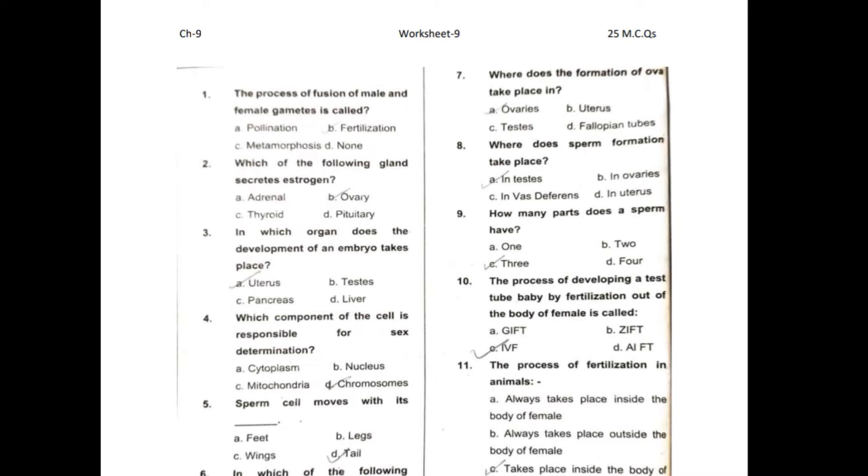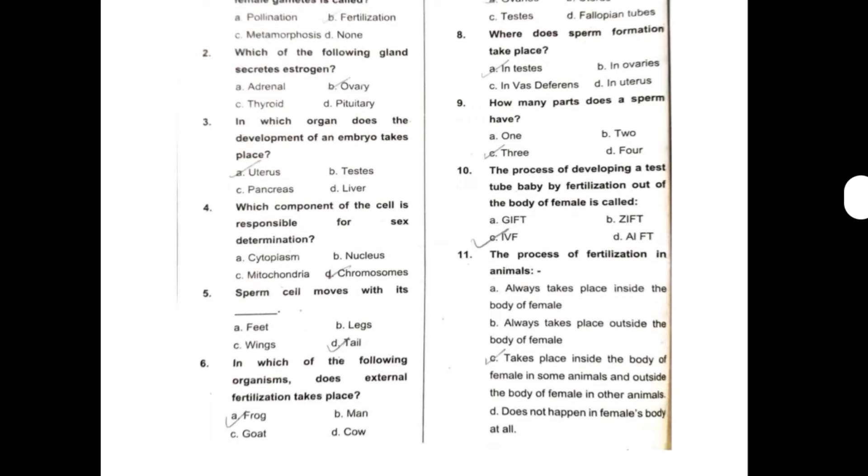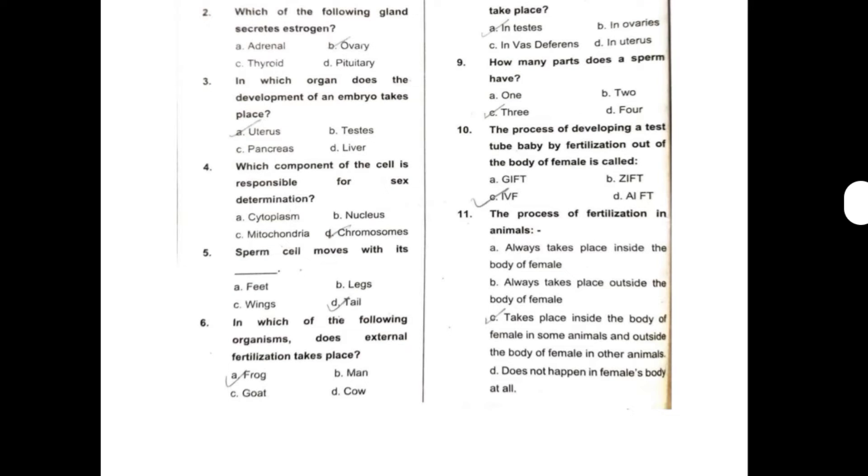First, the process of fusion of male and female gametes is called... So this can be fertilization. Second, which of the following glands secretes estrogen? So this can be ovary. Third, in which organ does the development of an embryo take place? So this can be uterus.